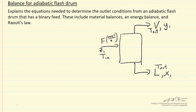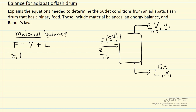For the material balance, an overall balance says whatever flows in must leave in either the vapor phase or the liquid phase: F = V + L. If we do a balance on component one, Z1 times F is the number of moles of component one flowing in, Y1 times V is how much leaves in the vapor phase, and X1 times L is how much leaves in the liquid phase.